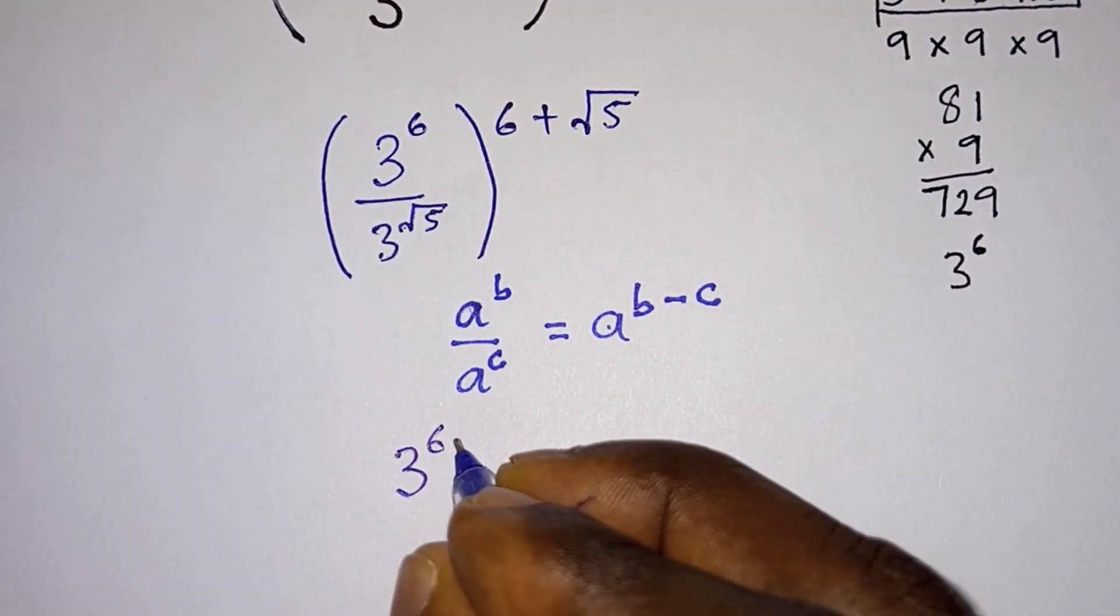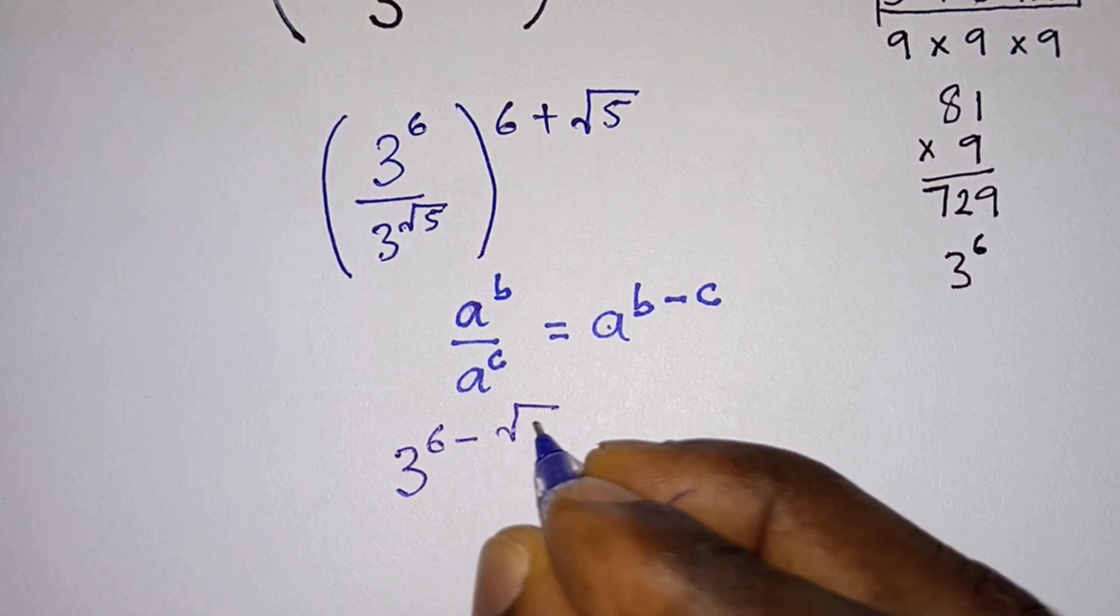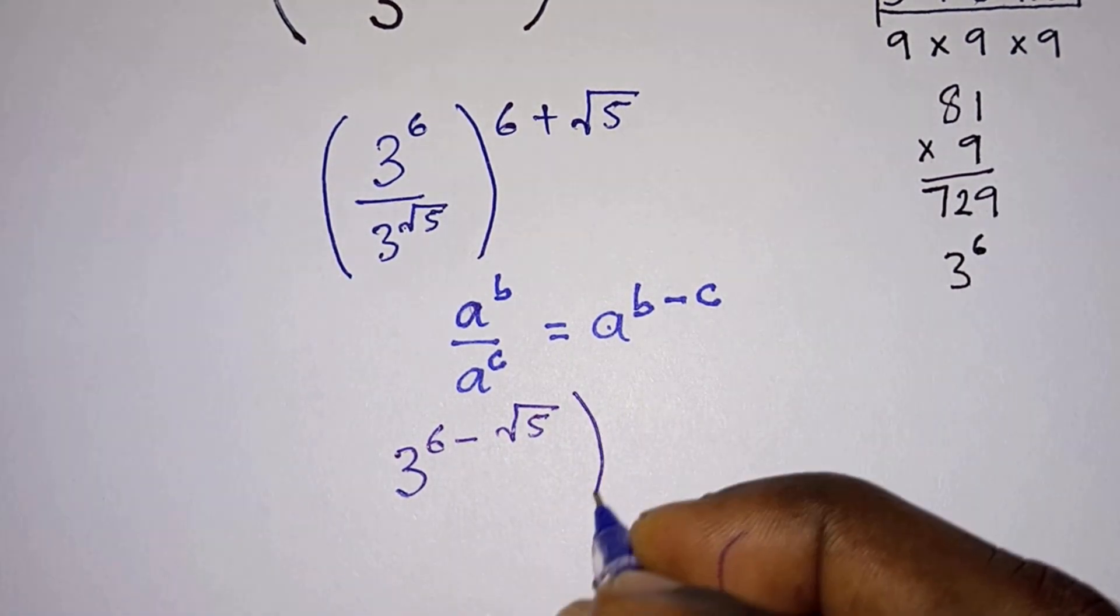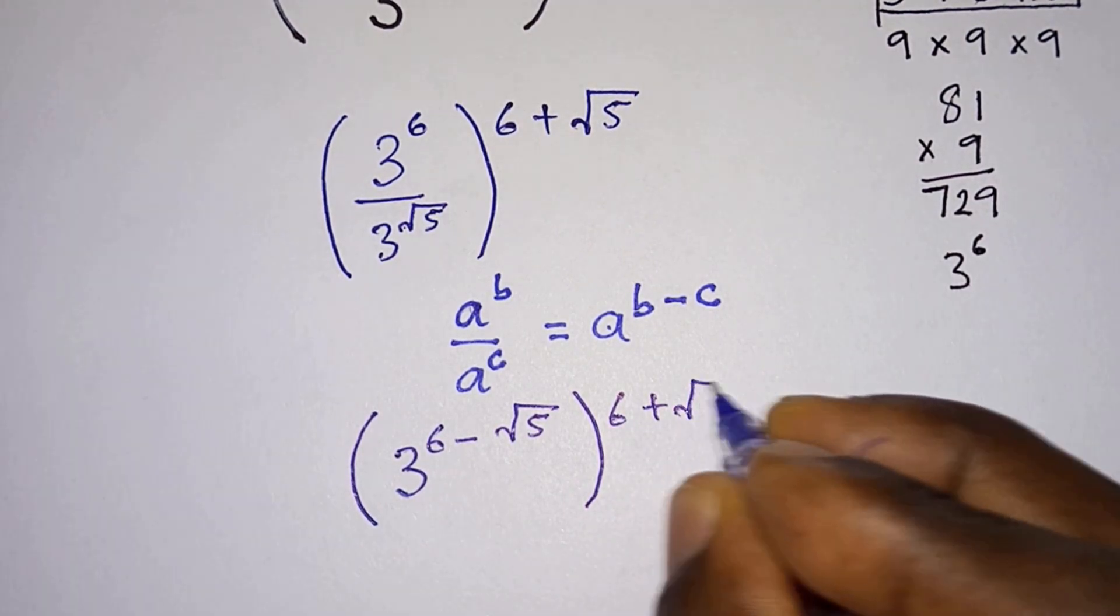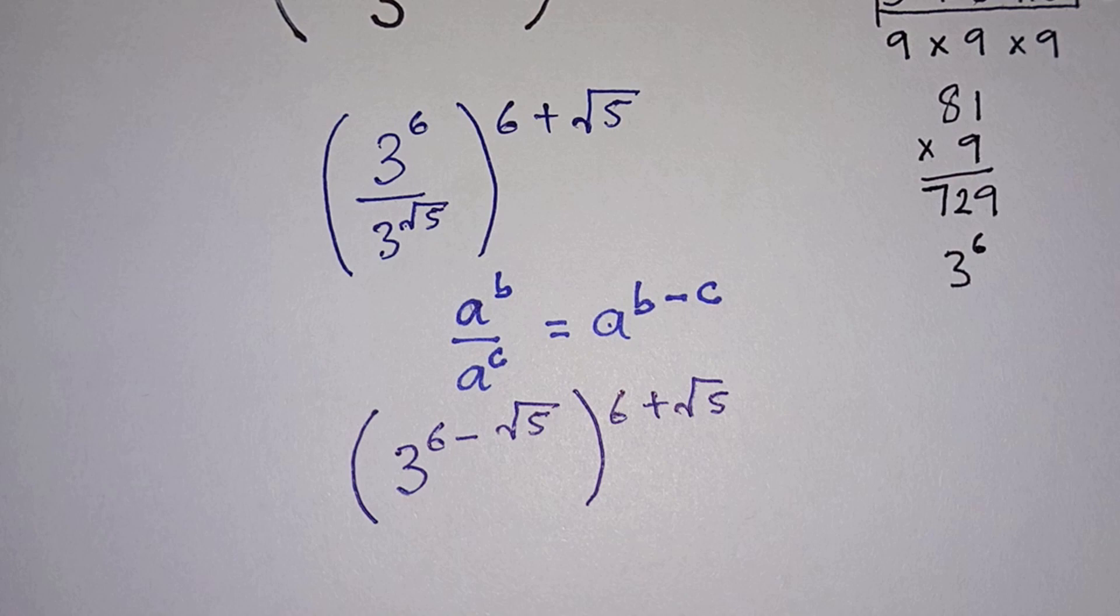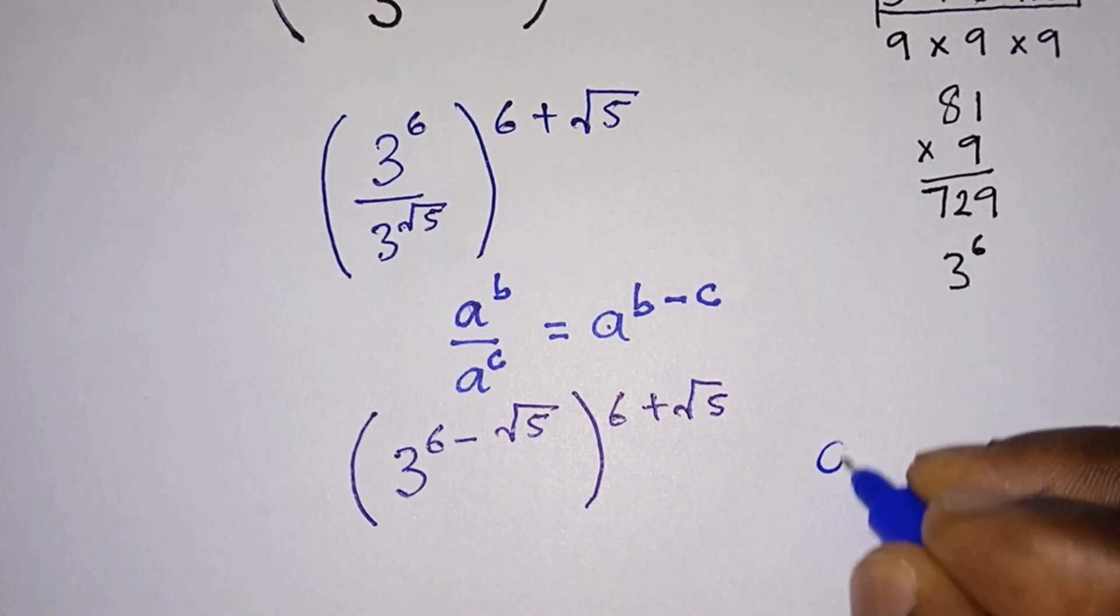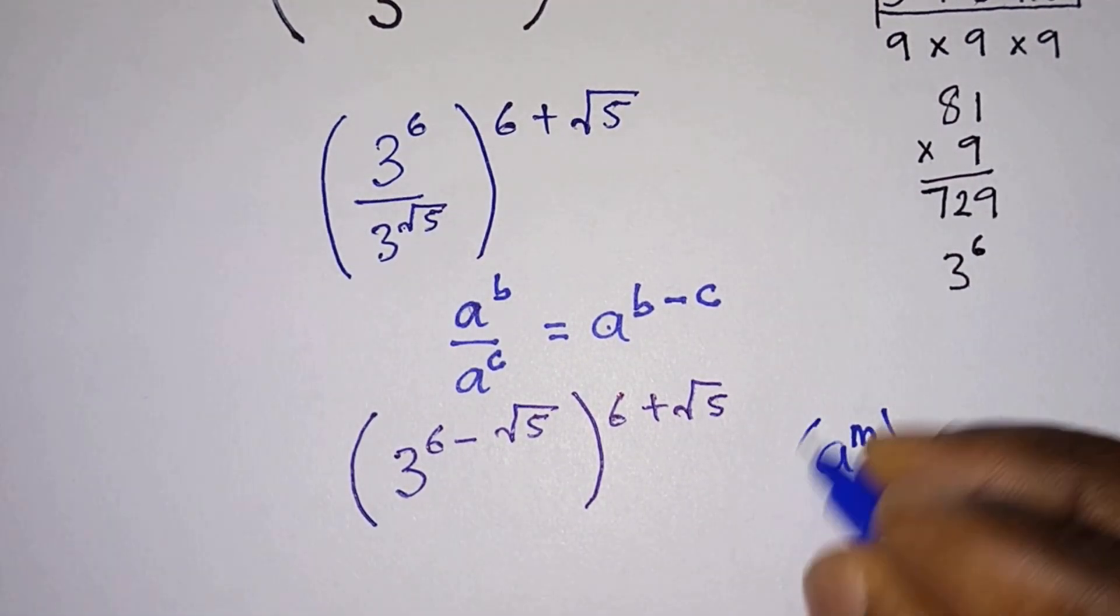Then all to the power 6 plus square root of 5. Then again we will recall that a to the power m all to the power n is the same as a to the power m times n.